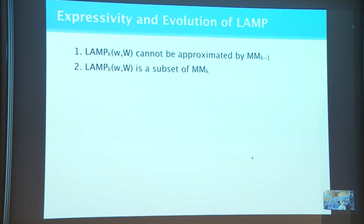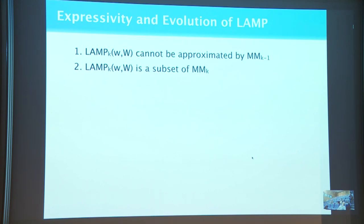In terms of expressiveness: we've taken the transition matrix and added a single weight vector. A LAMP process with access to k elements of history cannot be approximated by a (k-1)-th order Markov process, even though that Markov process has many more parameters in reasonable settings. However, it can be fully captured by a k-th order Markov process.